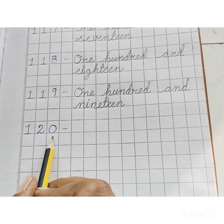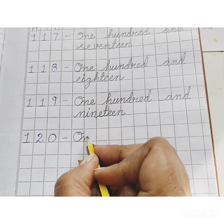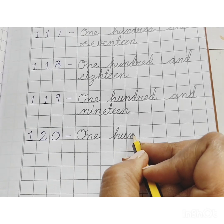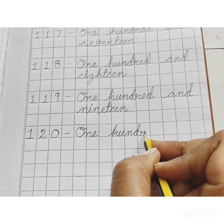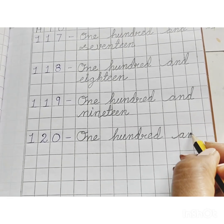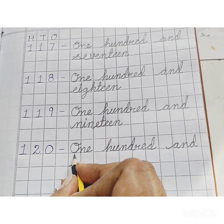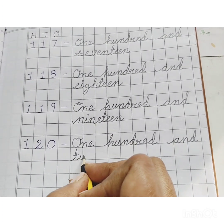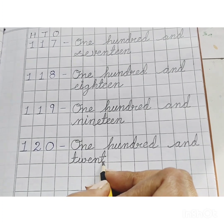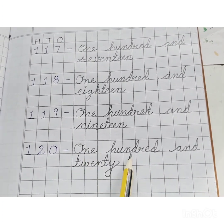Next, 120: O, N, E — 1; H, U, N, D, R, E, D — 100; A, N, D — and; 20 — T, W, E, N, T, Y — twenty. 20 — 120.